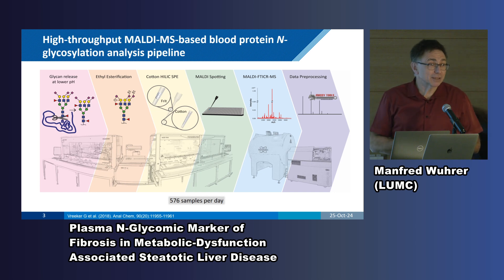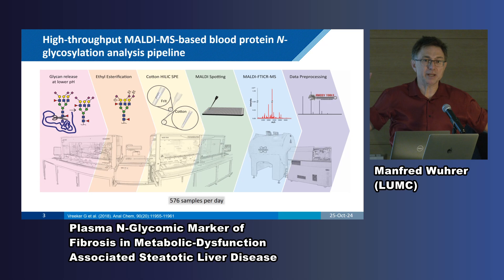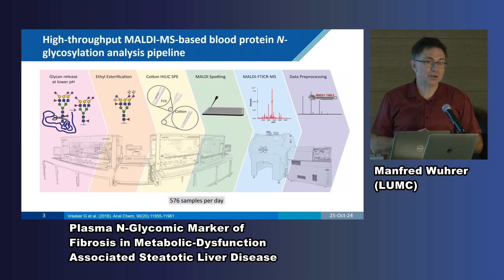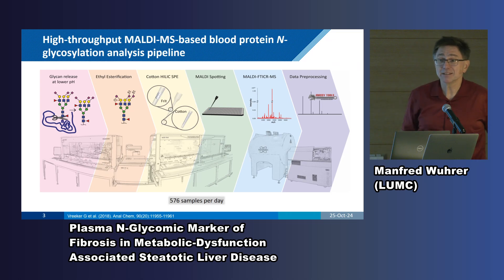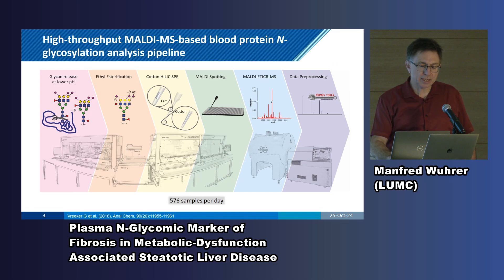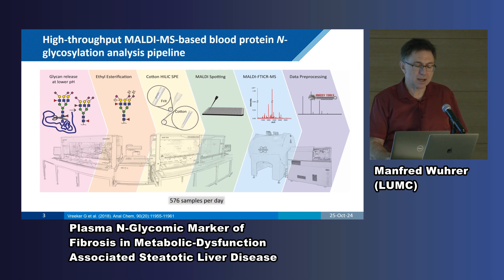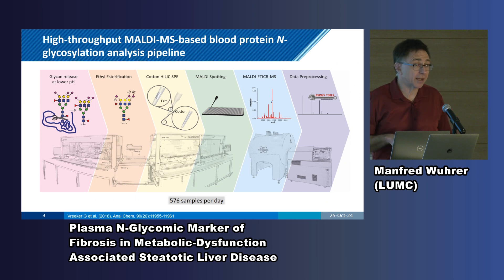We do blood because it's accessible. Blood for me is an umbrella term meaning whole blood, serum, or plasma. The workflow we use is on a robot — as already mentioned by Ken, we need robotization for these workflows. What we do is take a few microliters of serum or plasma, release the glycans by PNGase F, and then a key step is the derivatization of the sialic acids.